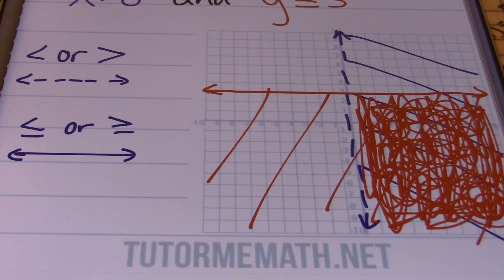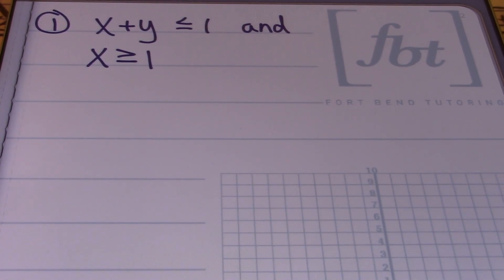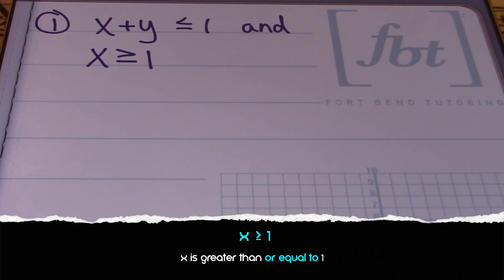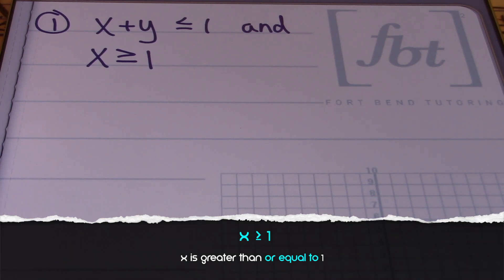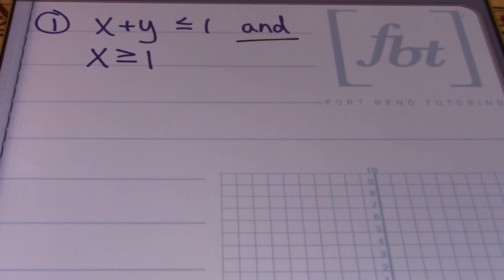Let's start with problem number one. In problem number one, we have x plus y is less than or equal to one and x is greater than one. With the word 'and,' this is an intersection, so I'm looking for an area where the solutions of both inequalities overlap. That's what I need to find.